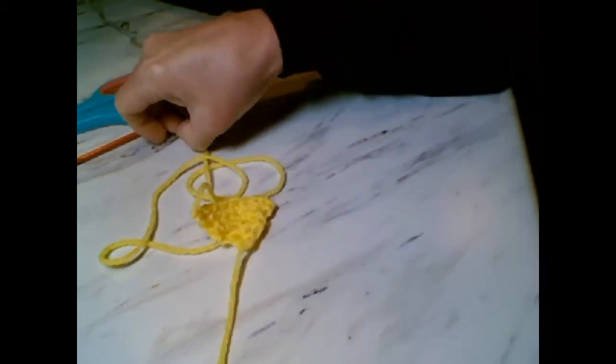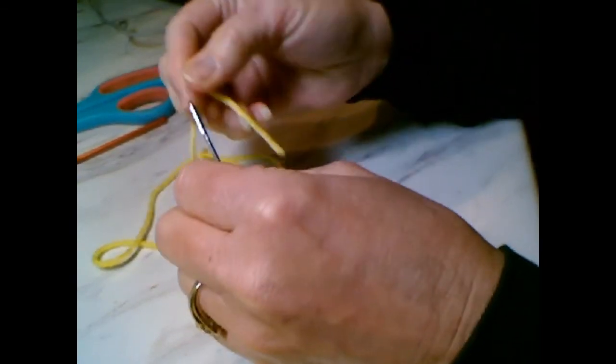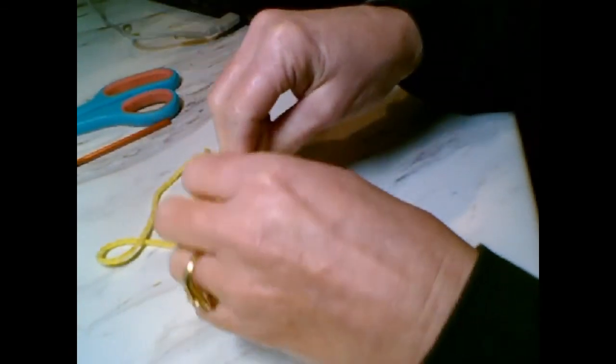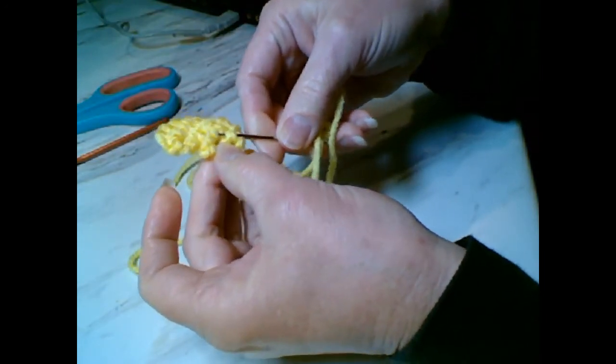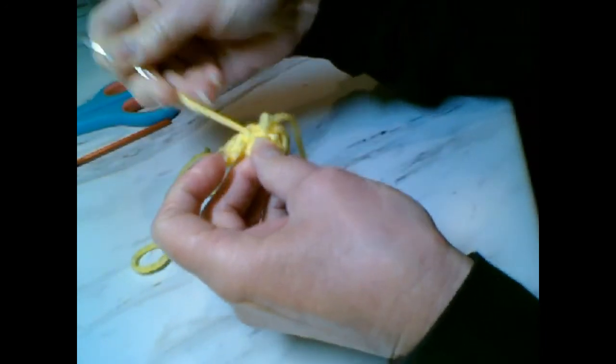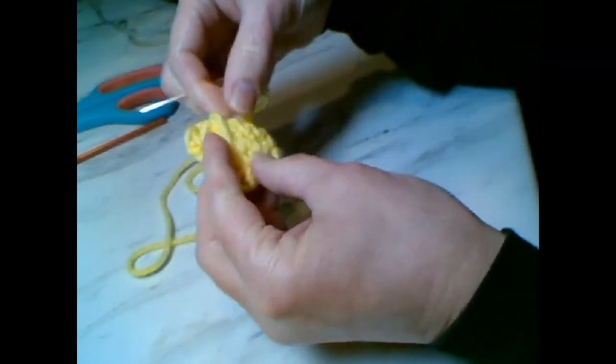This end, just take your yarn needle and you're just going to work in your loose ends. Turn it to the back and just kind of work it in the way you always do. Try not to pull too tight. You want to keep some kind of a point.